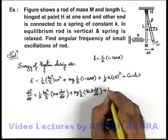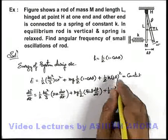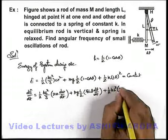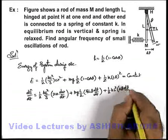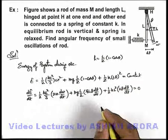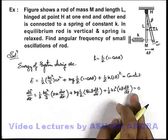Plus ½kL², differentiation of θ² will be 2θ dθ/dt, and this must be equal to zero as overall energy remains constant.